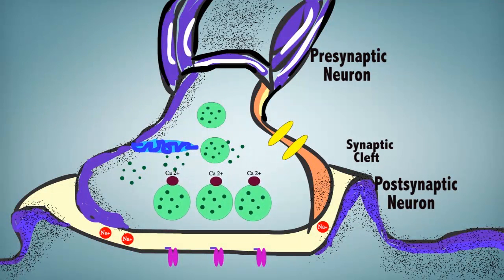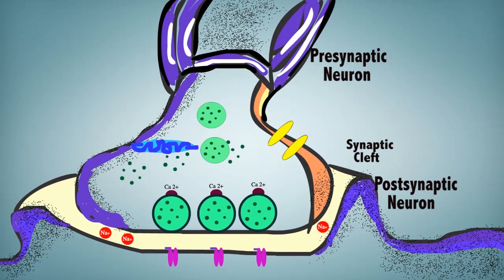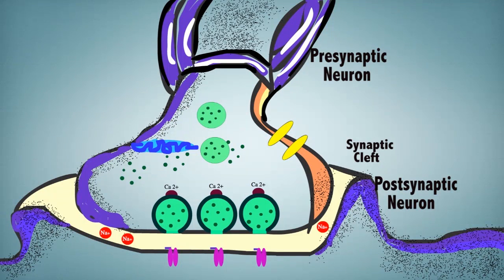The fusion creates an opening causing exocytosis. The neurotransmitters are released and enter the synaptic cleft.